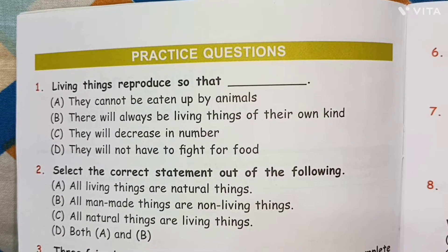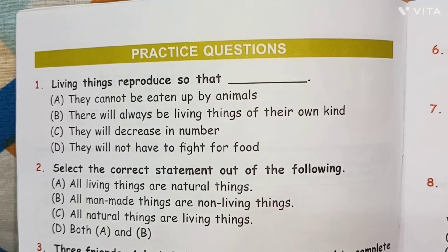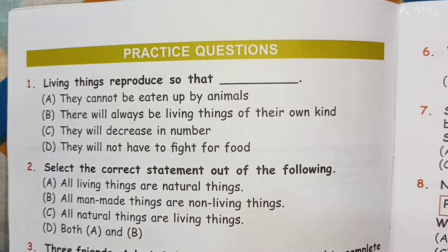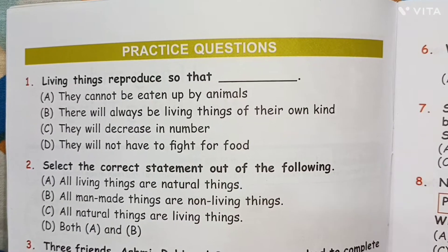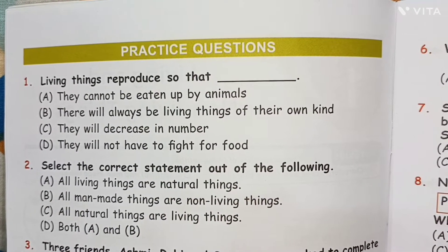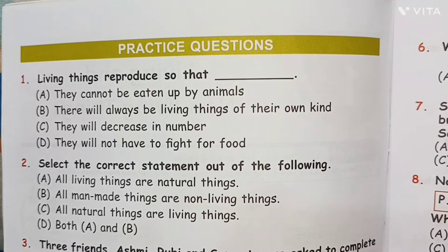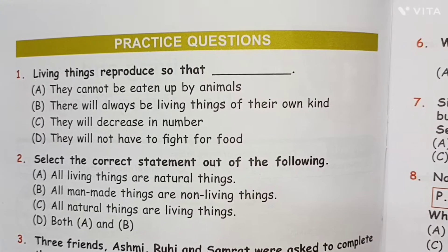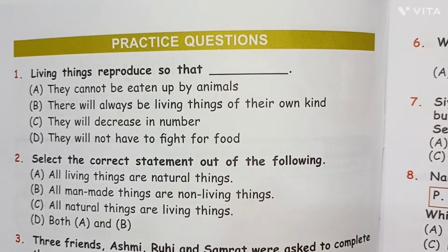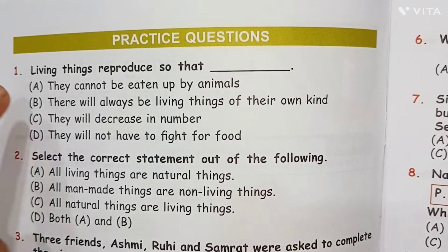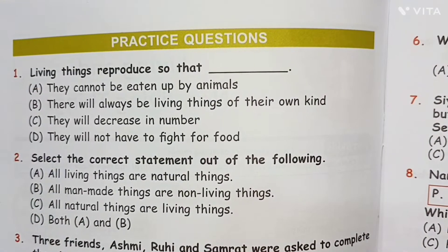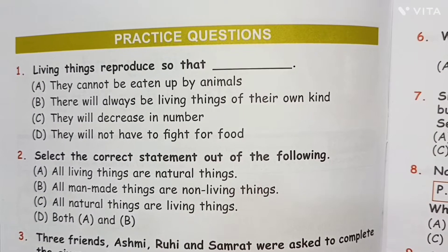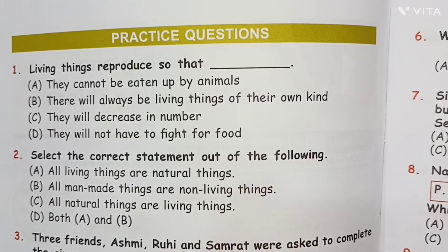Question 1: Living things reproduce so that — the options are: they cannot be eaten up by animals; there will always be living things of their own kind; they will decrease in number; they will not have to fight for food. The answer is option B: there will always be living things of their own kind.